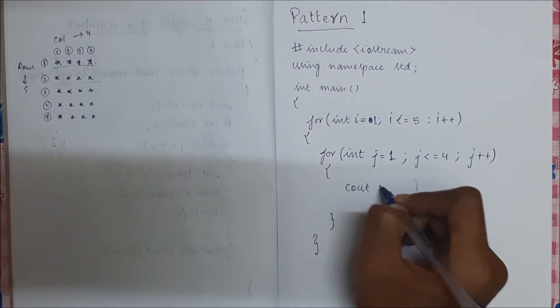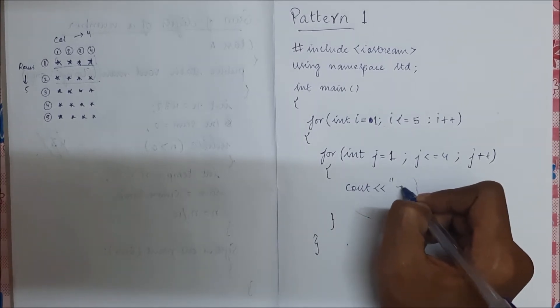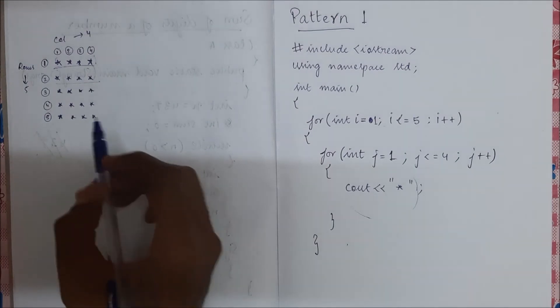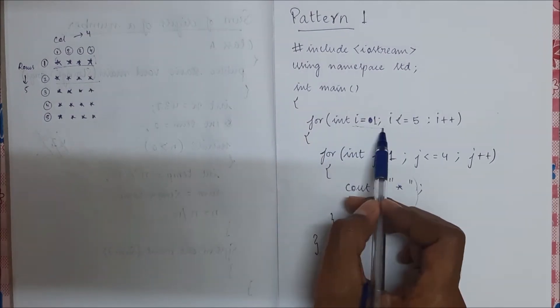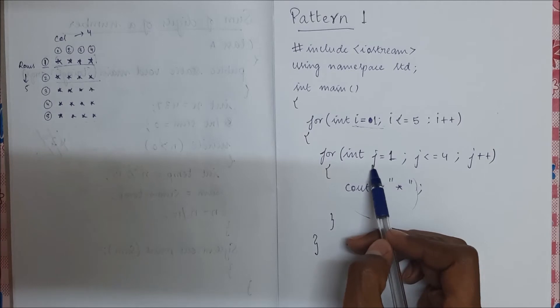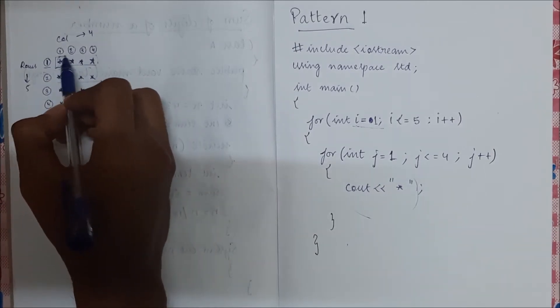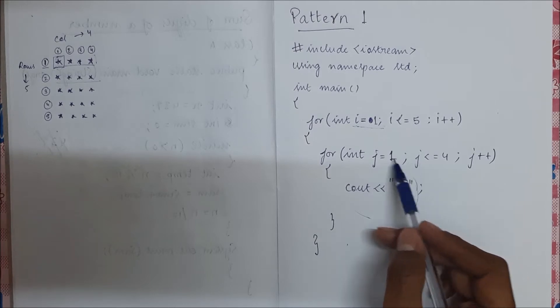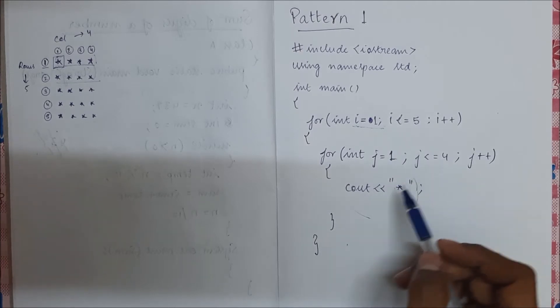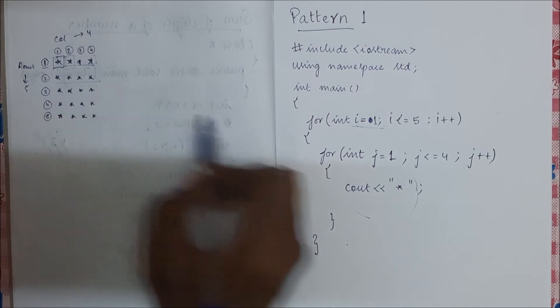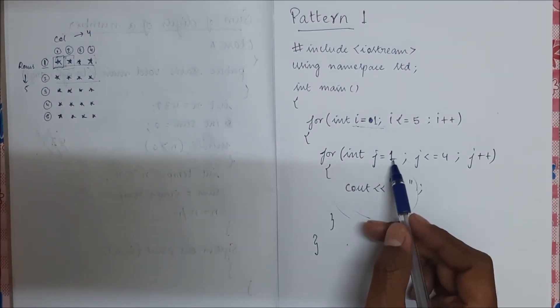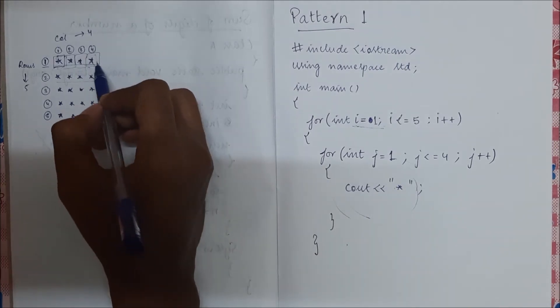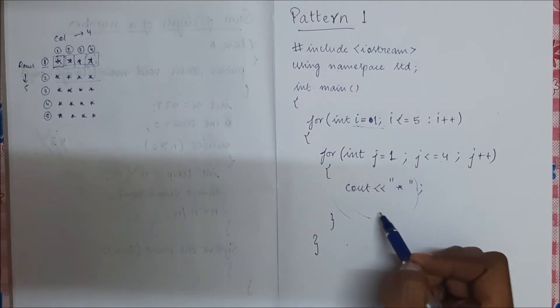What we have to do here is we have to print the star. Okay, so i is one, that is row number is one, j is also one, so here we print the star. Now j plus plus, j becomes two and we print the star. So this will be printed. Next time the loop runs, j will become three.